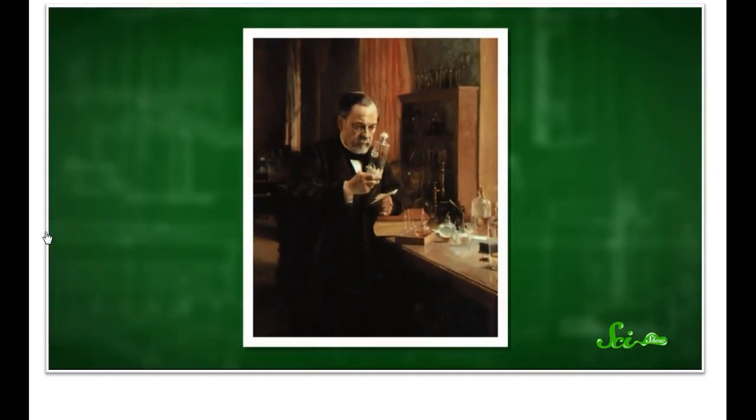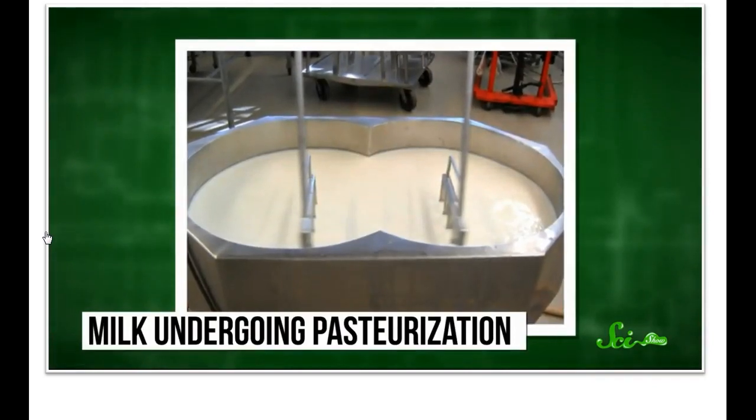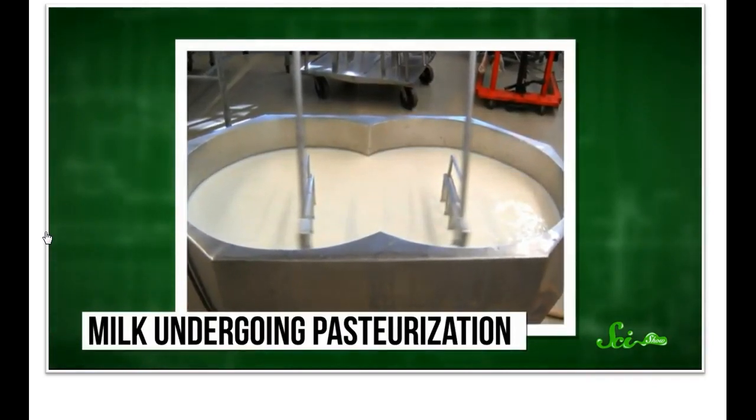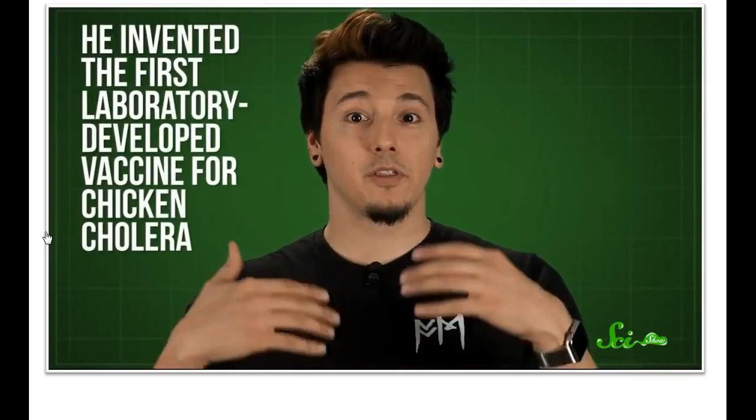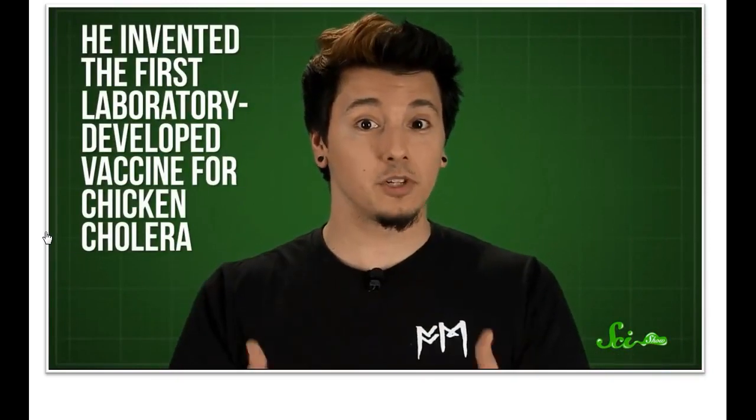With his newfound understanding of microbes, Pasteur experimented with techniques to keep wine and milk from spoiling. Then in 1862, he found that heating wine without actually boiling it would still kill bacteria and keep it from spoiling — the process we now call pasteurization, still used today to protect and preserve foods like milk and other dairy products. By this point in his life, Pasteur was in his mid-40s and not doing well health-wise — he had a stroke and ended up partially paralyzed. Even so, he continued his experiments and went on to invent the first laboratory-developed vaccine for chicken cholera, then created vaccines for anthrax and rabies.